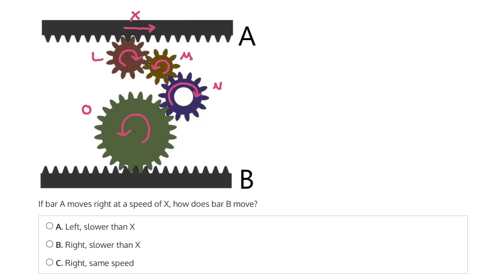So now we have this last gear, gear O, and bar B, which are directly meshed. And if gear O is rotating counterclockwise, then we can see that bar B will be moving to the right. And because we have the same tangential velocity going from bar A to gear L, gear L to gear M, and so on, we know that bar B will also have a tangential velocity equal to X. And therefore, the correct answer is C, to the right and at the same speed.